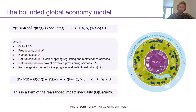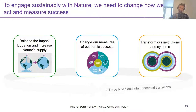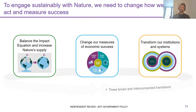If we accept the need for effective institutions and that we're embedded in the natural world, ultimately we need to change how we think, act, and measure economic success. The review proposes three transitions. The first is to balance the impact equation: we need to move from demand overshoot back to parity, where our demands equal what nature can supply. Because we've depleted nature's supply for so long, it's also critical that we boost that supply and build back our stock of natural assets.